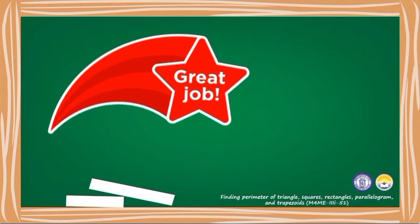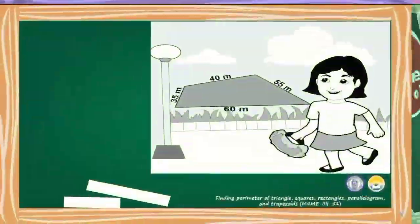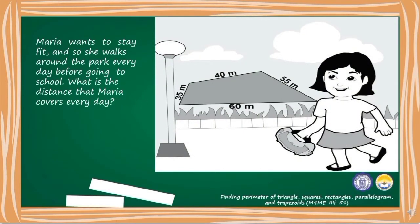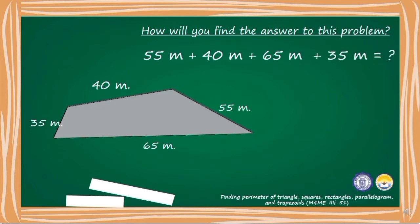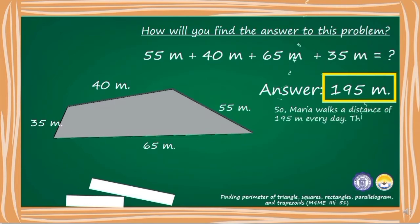Great job kids! Maria wants to stay fit and so she walks around the park every day before going to school. What is the distance that Maria covers every day? How will you find the answer to this problem? 55 meters plus 40 meters plus 65 meters plus 35 meters equals 195 meters. So Maria walks a distance of 195 meters every day. This distance around the park is called perimeter.